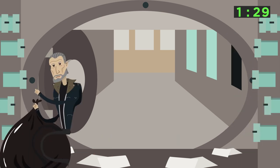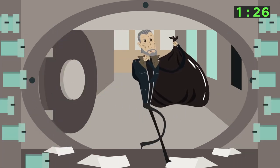While 47 is busy ending lives, the Shadow Client breaks into a Providence vault and steals the top secret contents within.